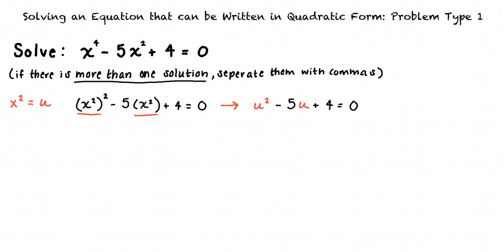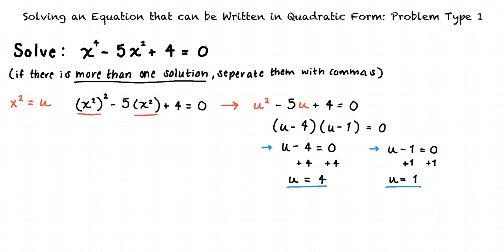Now, we can factor this equation. u minus 4 times u minus 1 equals 0. And next, we will solve: u equals 4 and u equals 1.